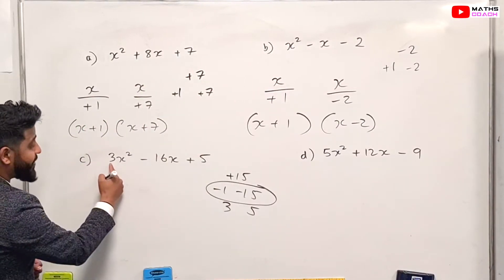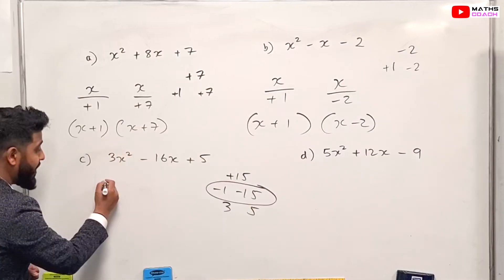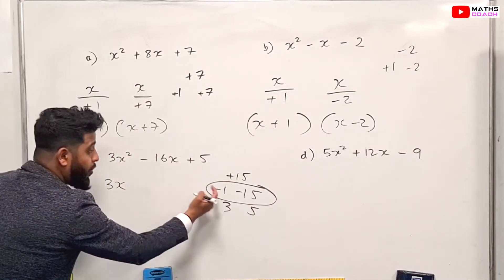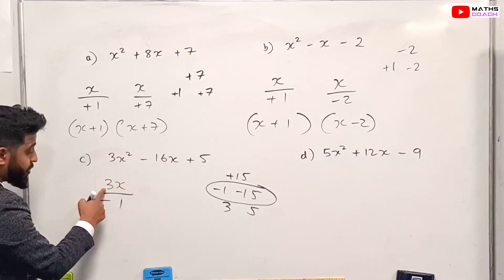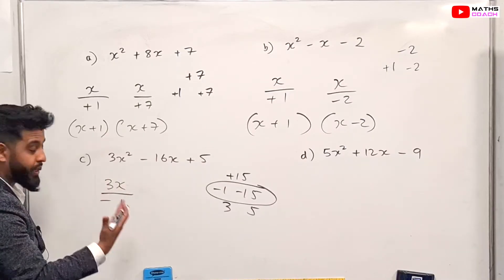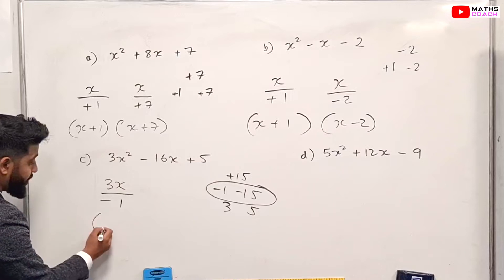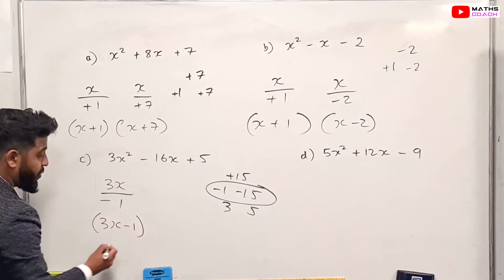Now this is where you pay attention, because what we did here was pretty much straightforward. Here, what we do is we take the 3x squared without the square, so we just write 3x over minus one. And we simplify this if we can. So the numbers we try to simplify. Obviously we can't, so this bracket will just become 3x minus one.